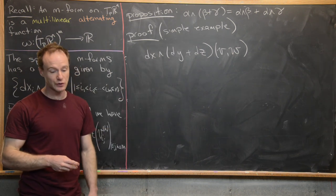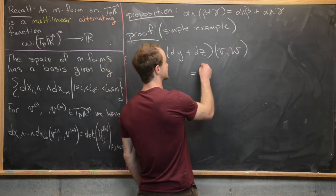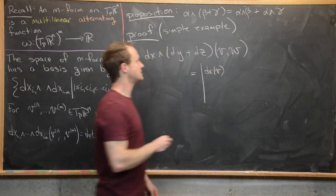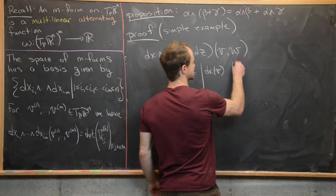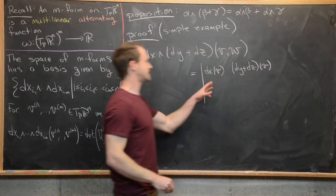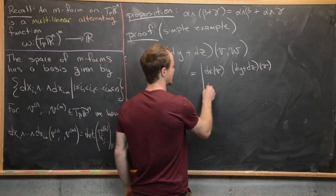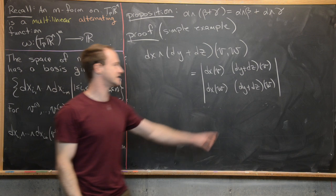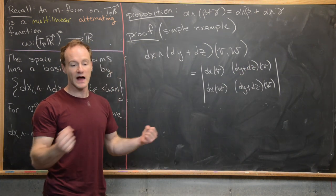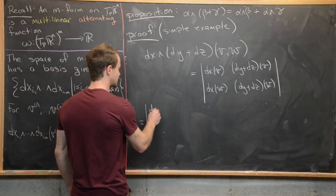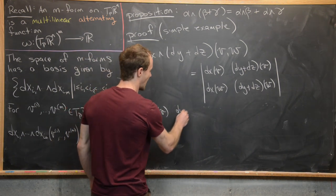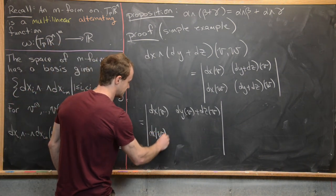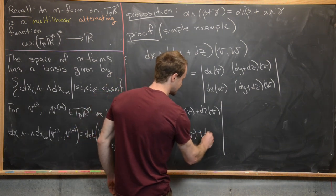Since this is a product of one-forms it gives a two-form, and we know it equals the determinant of the matrix with entries: top row (dx(v), (dy+dz)(v)) and bottom row (dx(w), (dy+dz)(w)). Since dy+dz is a sum of functions, we can split: top row becomes (dx(v), dy(v)+dz(v)) and bottom row (dx(w), dy(w)+dz(w)).